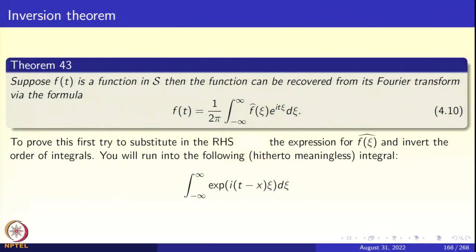We shall first prove the inversion theorem that you see on the slide. Theorem 43: suppose f is a function in S, and the function can be recovered from its Fourier transform via the inversion theorem, equation 4.10: f of t equals 1 upon 2π times the integral from minus infinity to infinity of f-hat of χ times e to the power i t χ d χ. Notice that in the inversion formula, the right-hand side is very similar to the definition of the Fourier transform, except for the factor 1 upon 2π and the change in sign — in the definition there was e to the power minus i t χ, whereas in the inversion theorem there is a plus sign.